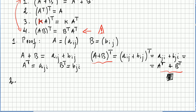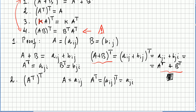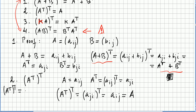What about property 2? So what is A transpose transpose? A has entries A_ij. A transpose has entries A_ji, because we reverse rows and columns. So what is A transpose transpose? That will be A_ji transposed, which gives back A_ij. So A transpose transpose is the same as A.